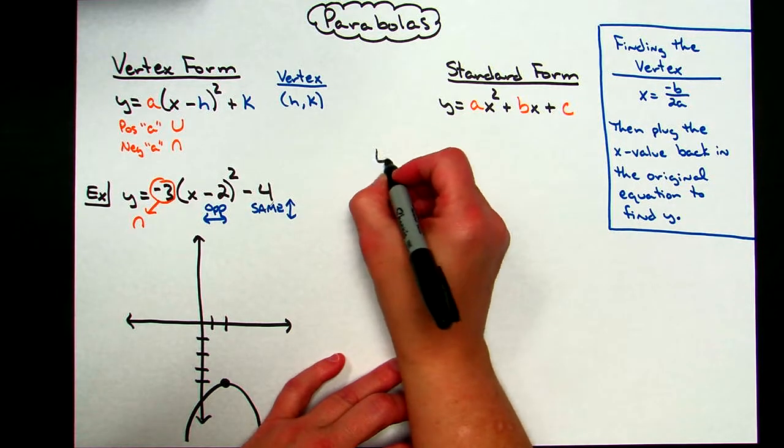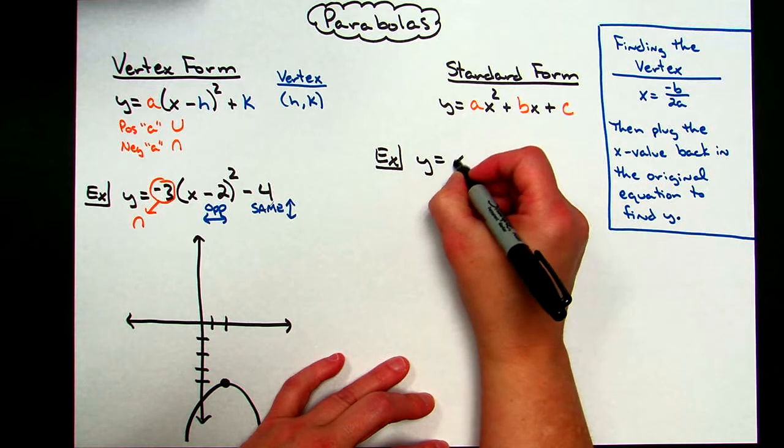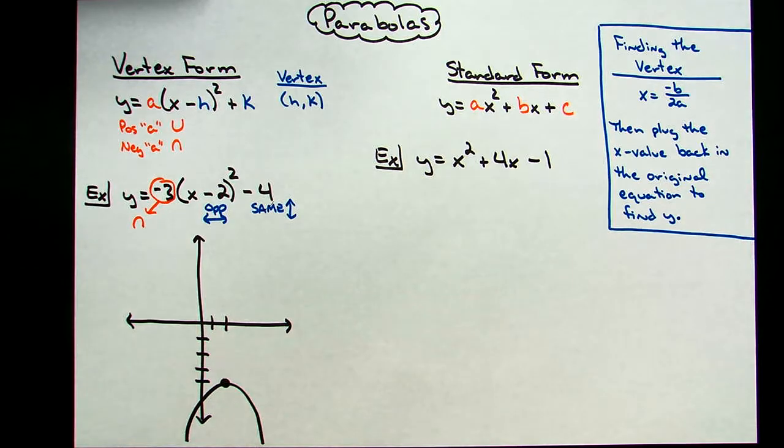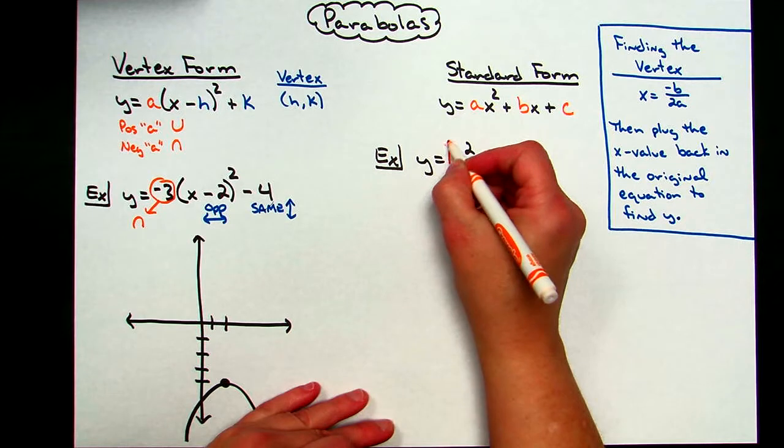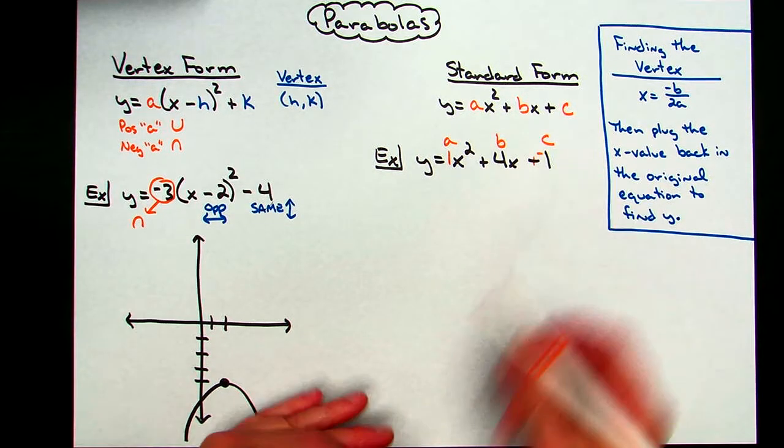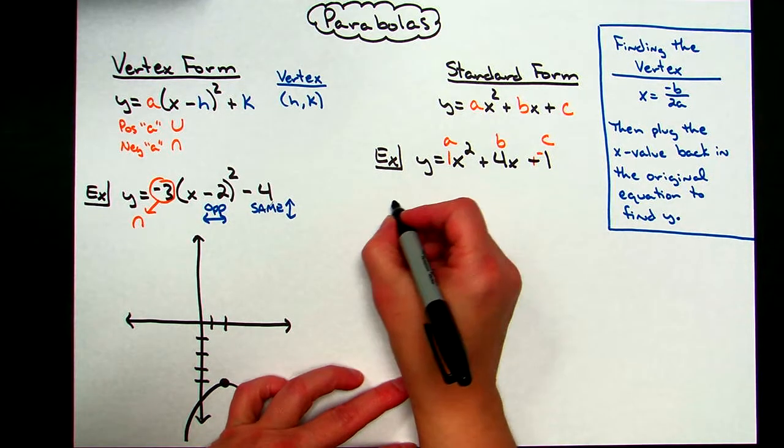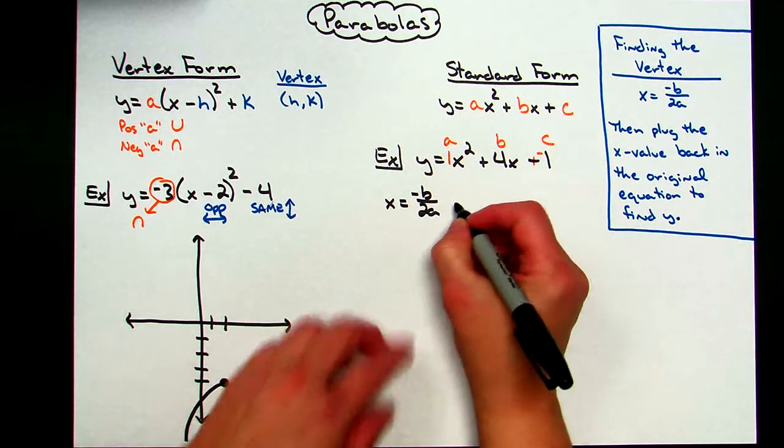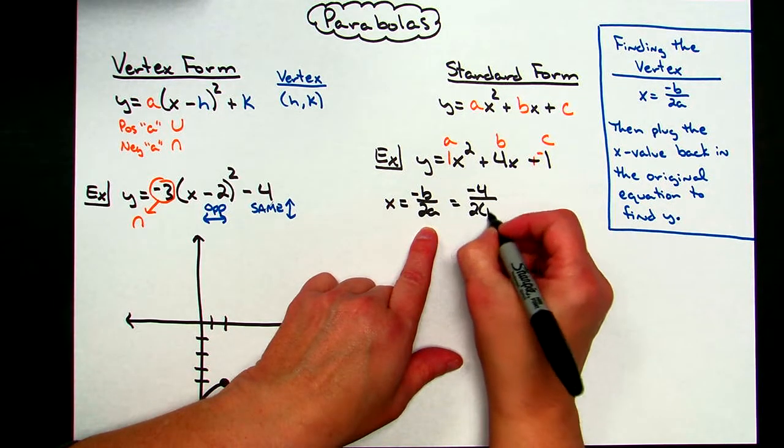So I'm doing an example here. Let's say that we've got y = x² + 4x - 1. In standard form, my a coefficient here is 1, my b coefficient is 4, and my c coefficient is -1. So I need to find that vertex before I can do a rough sketch. So I'm going to use the formula x = -b/2a.